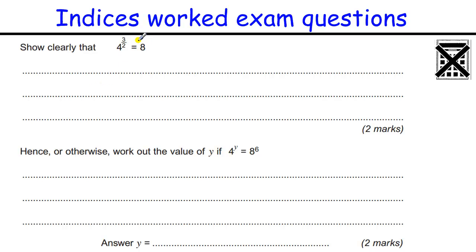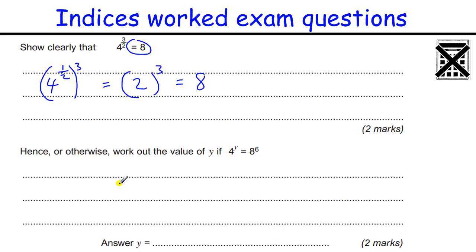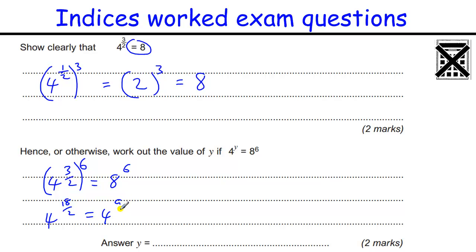Show clearly that 4 to the power of three-halves equals 8. Take the square root first: 4 to the one-half is 2, then 2 cubed is 8. Now find y where 4 to the y equals 8 to the 6. Since 4 to the three-halves equals 8, raise both sides to the power of 6: 8 to the 6 equals 4 to the three-halves to the power of 6, which is 4 to the 18 over 2, so 4 to the 9. Therefore y equals 9.